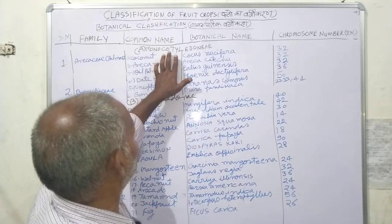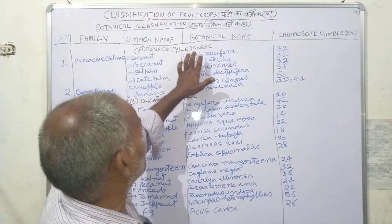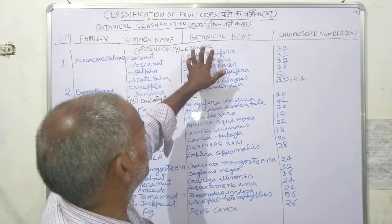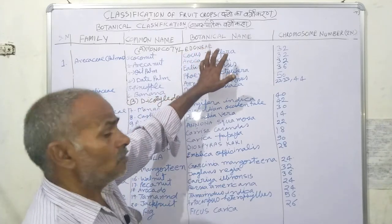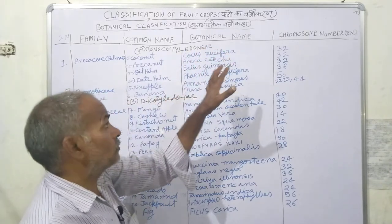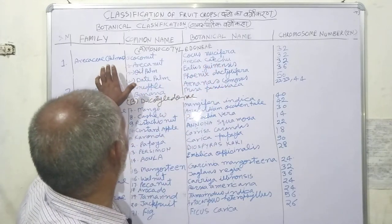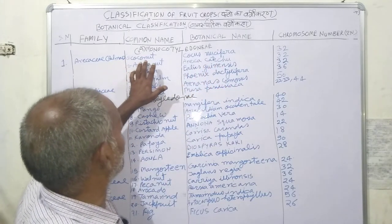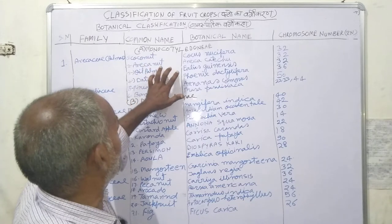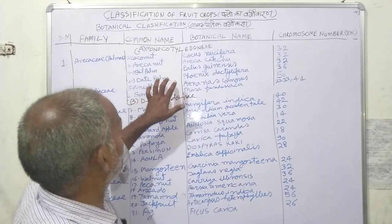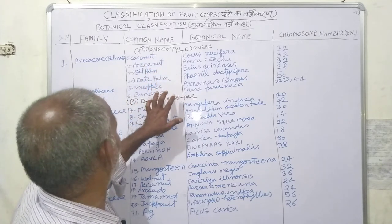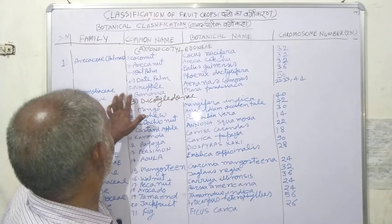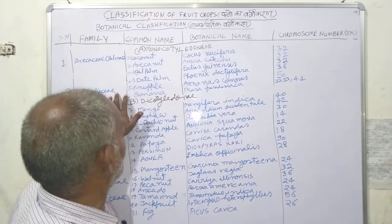First of all, the families which belong to the monocot group. One family in this group is Arecaceae — the palm family. Fruits in this family include coconut, areca nut, oil palm, red palm, pineapple, and date palm.